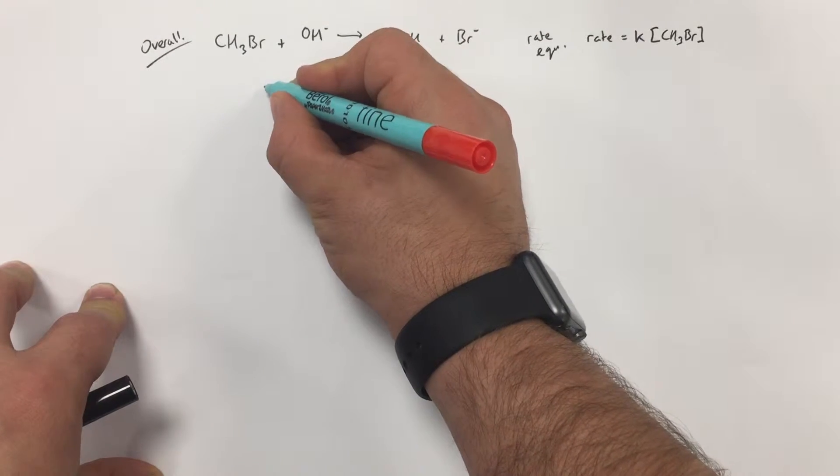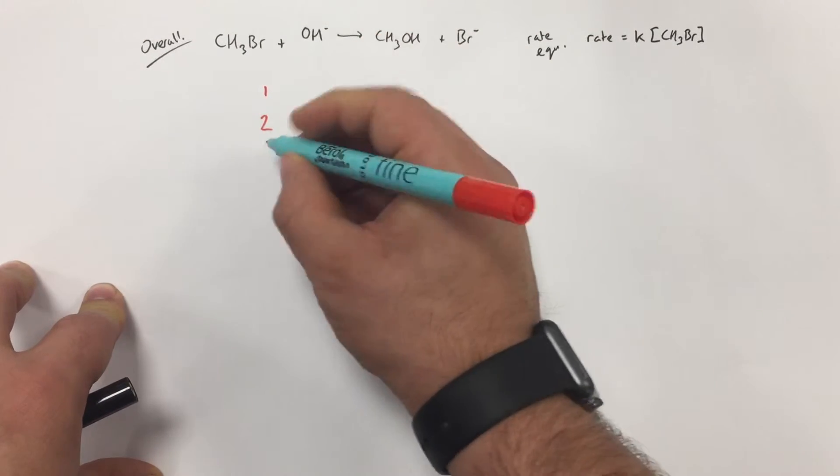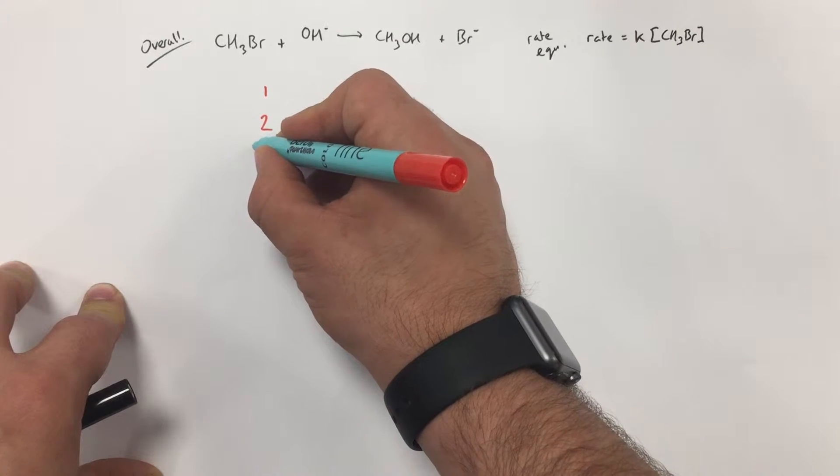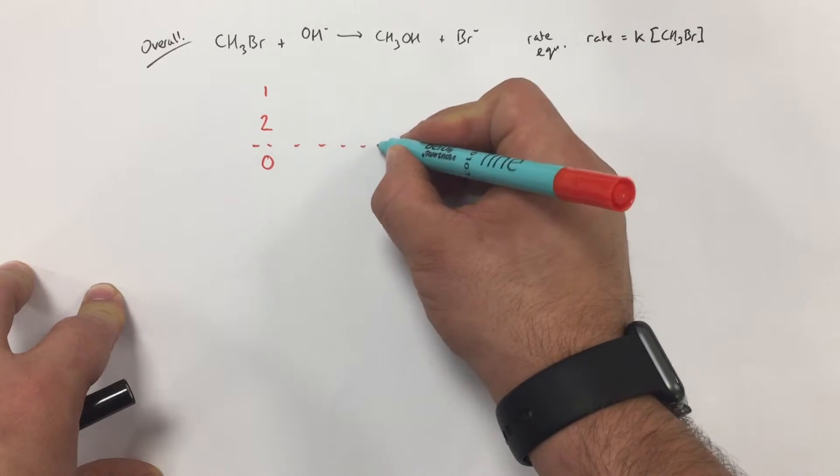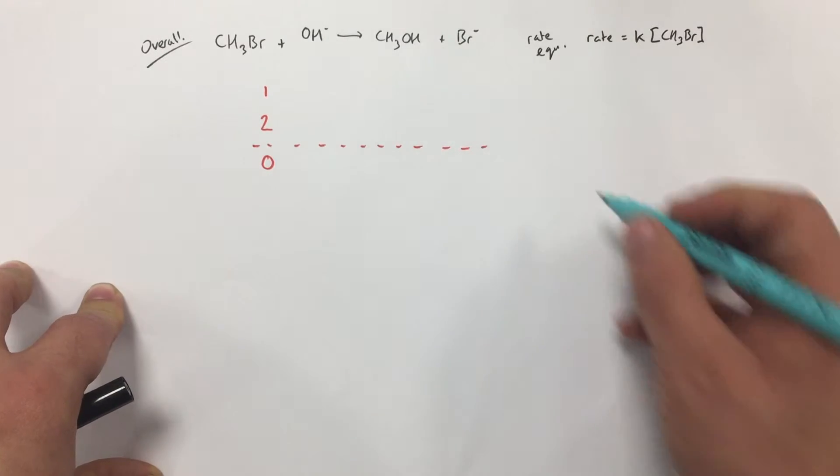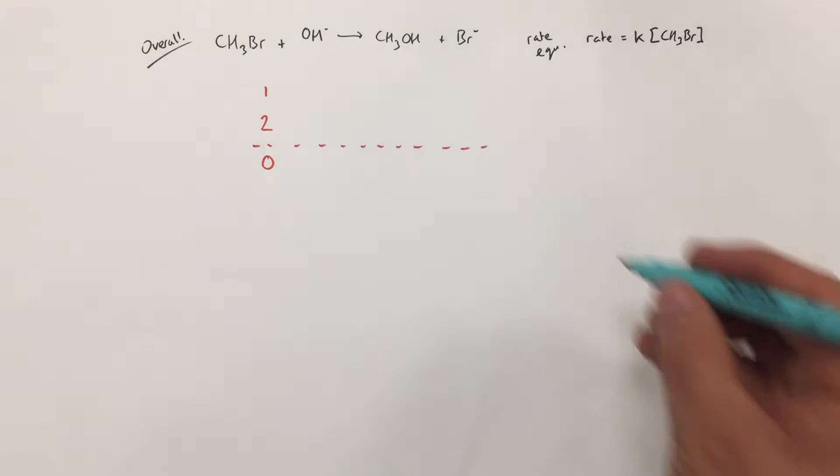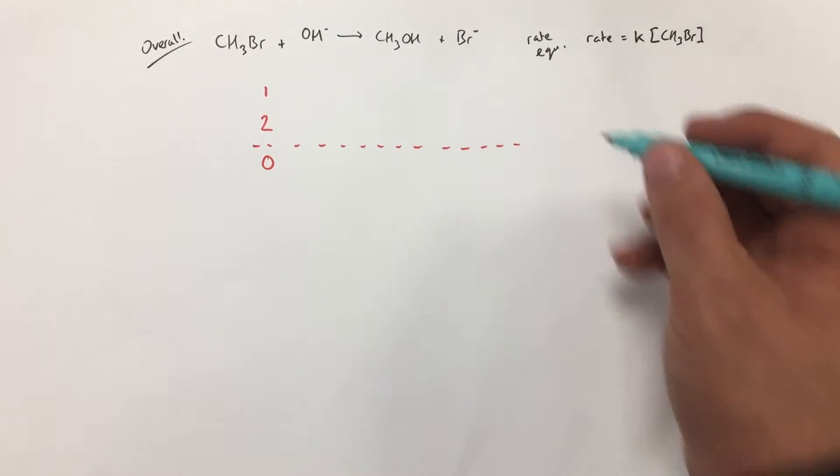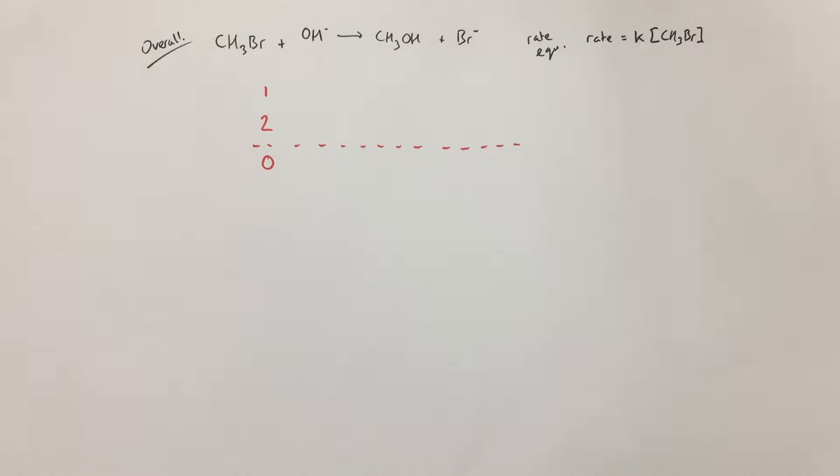When you set this out in your exam, set it out as step one, step two, and then overall. While they can ask you to do a three-step mechanism, this is less likely. If they do, they'll give you additional information, so we're going to start with a basic one here and just do a two-step mechanism.